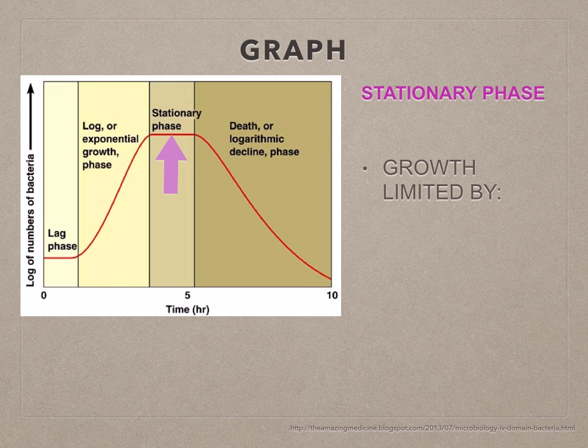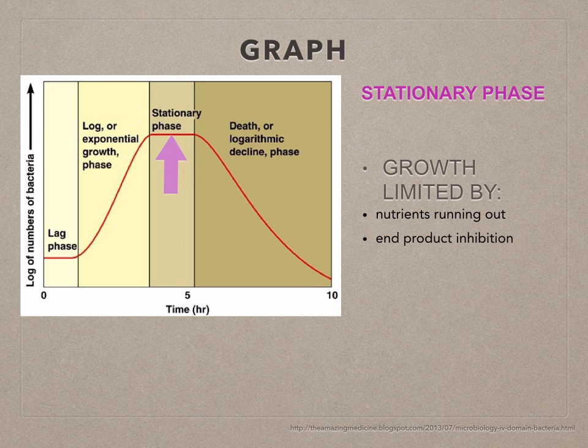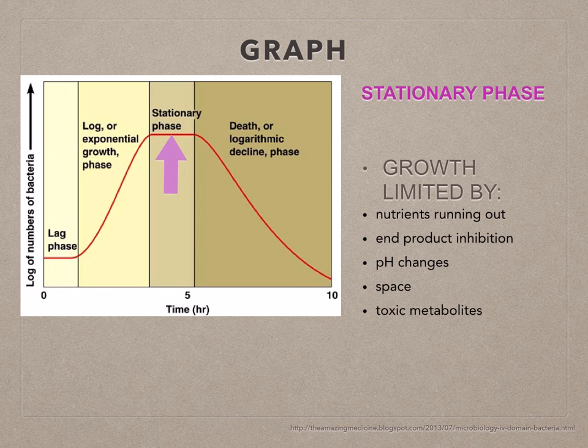The growth is limited by the nutrients running out or end product inhibition, pH changes, space, and toxic metabolites.